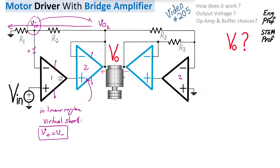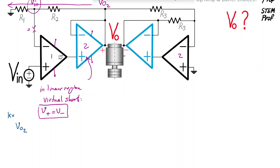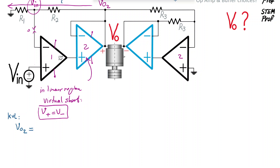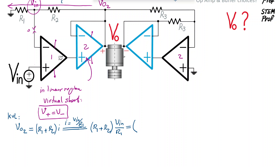To calculate Vout2, we apply KVL: Vout2 is simply equal to the current i flowing through R2 and R1 in series, times (R1 + R2). The current i is simply Vin across R1 divided by R1, so i = Vin / R1. Substituting for i, we get Vout2 = (1 + R2/R1) × Vin — similar to the traditional non-inverting amplifier formula, also applicable in this generalized version of the non-inverting amplifier with a buffer inserted in the feedback loop.